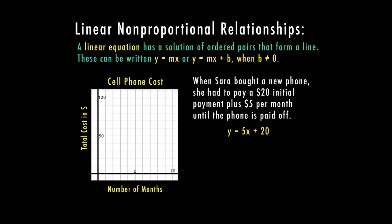If we have our graph here, we have our cell phone cost. On the bottom, we have the number of months, that is our x. And then our y is the total cost in dollars. Anytime that we have a graph, we can also fill out a table. So let's fill out the table based on the equation.